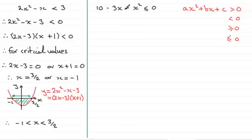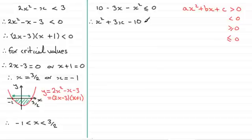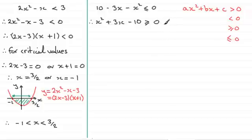So multiplying through by minus 1: the term becomes x squared, minus 3x becomes plus 3x, and 10 becomes minus 10. But you have to be careful now — if I multiply both sides of my inequality by negative 1, we must reverse the inequality sign when you multiply or divide by a negative number. Do remember that. Now that I've done that, I'm going to factorise it, and this one does factorise.